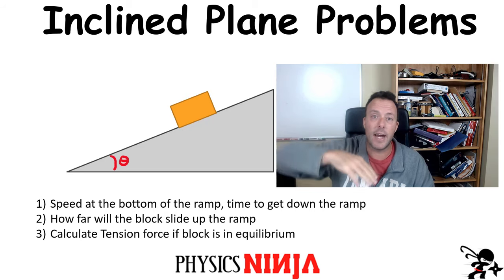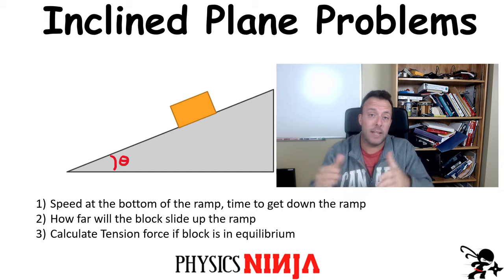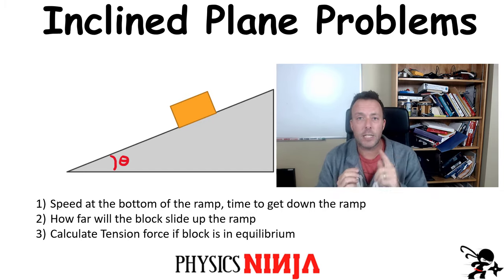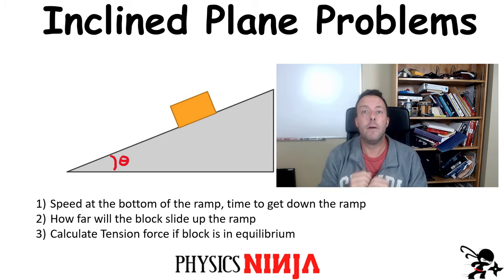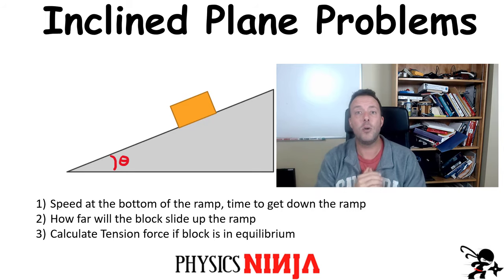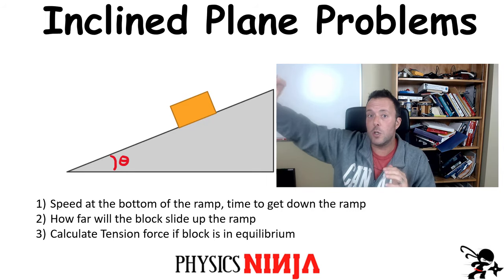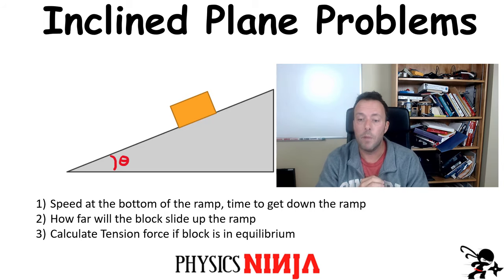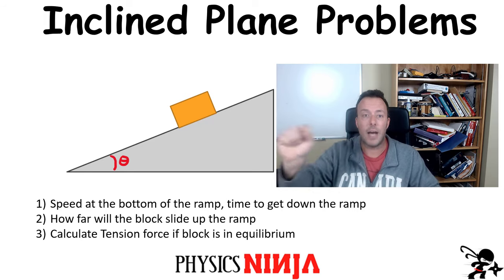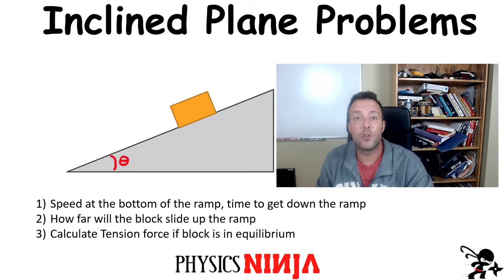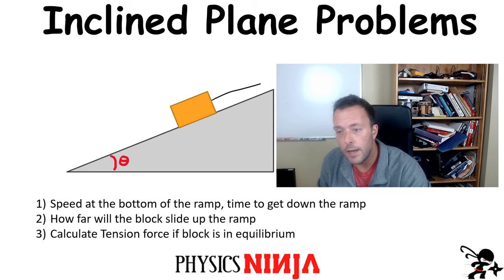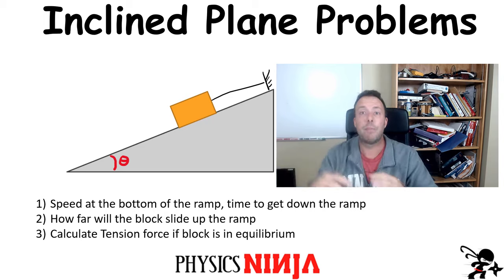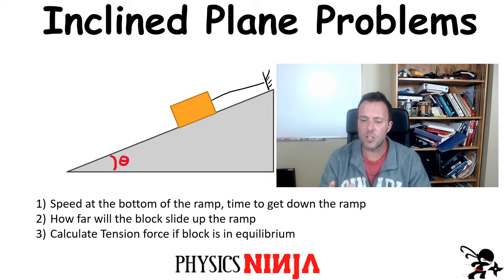The first problem is: what if I just let it go and it slides down the ramp? How would you find the speed at the bottom of the ramp and how would you find how much time it takes to go down the ramp? The next problem: what if I launch the block up the ramp? I give it an initial velocity of some value and I want to know how far it goes before coming to a stop — and what if there was friction involved? The last one will be an equilibrium problem. I'm simply going to tie a string to that block and connect it to the wall. How would I find the tension in that string if the block doesn't move? So let's go and get started with these problems.